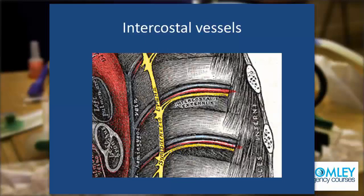The purpose of this image is to focus on the intercostal vessels and the insertion of chest drains. We have the vein at the top, then the artery, then the nerve — V-A-N — underneath the ribs. They run in a groove underneath the ribs and are vulnerable if a chest drain is inserted just below a rib. That's why we always insert a chest drain just above a rib.